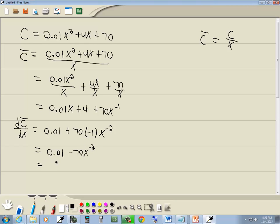So that gives us 0.01 minus 70x to the negative 2. And take the x to the negative 2 to the denominator, so we've got 0.01 minus 70 over x squared. Now we want to merge those into a single fraction.